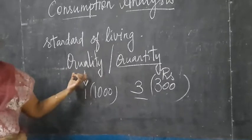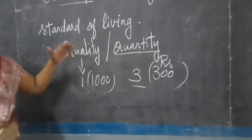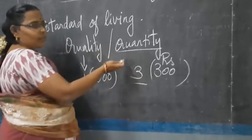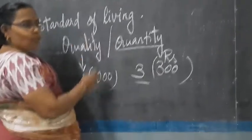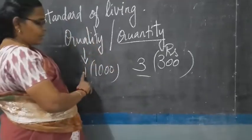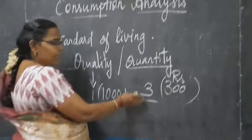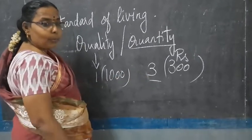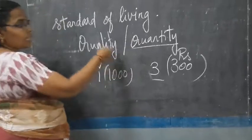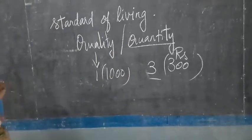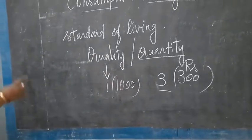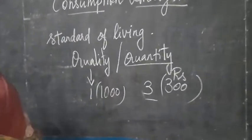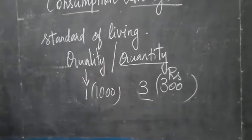So this quality and quantity determines the standard of living. The people those who are preferring the quality, they are rich. Spending 1,000 rupees for a single shirt — why can't we buy three? These are the thoughts of the middle class and the poor people. So these things determine the standard of living of a people. We studied consumption is the starting point, and our consumption is the act of satisfying the wants of people.